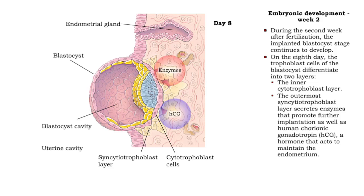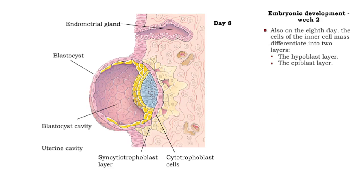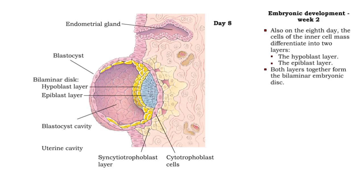In addition, human chorionic gonadotropin, a hormone necessary to maintain the nourishing secretions of the endometrial lining, is secreted. Also on the eighth day, the cells of the inner cell mass differentiate into two layers. Together, the hypoblast and epiblast layers form the flat bilaminar embryonic disc.